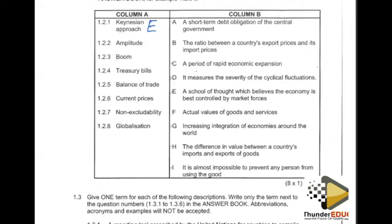For 1.2.2, we have amplitude. Amplitude measures the distance from trough to trough and peak to peak. It is a measure — a tool applied whenever they measure the flow of goods and services or the performance of economic activities. Our appropriate answer is D: it measures the severity of the cyclical fluctuations.